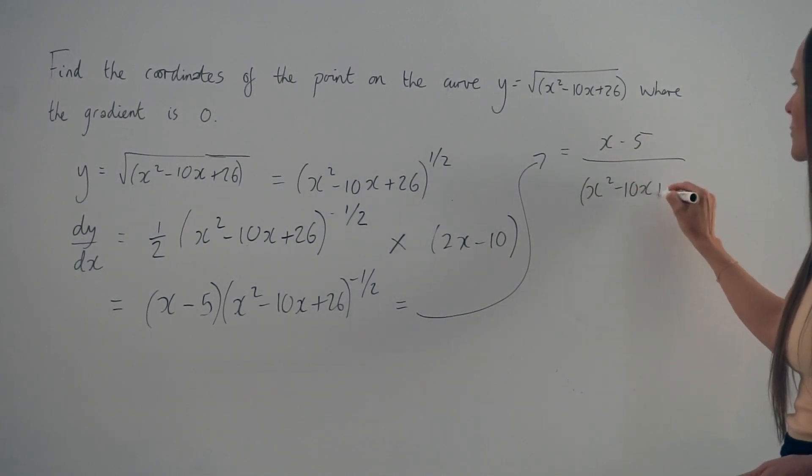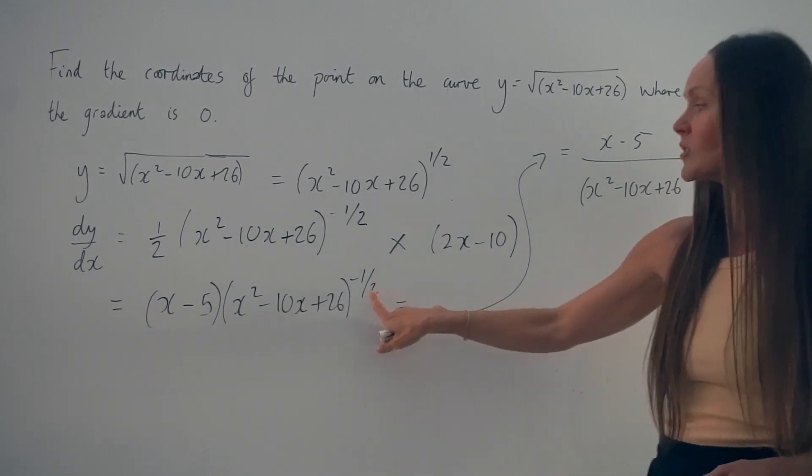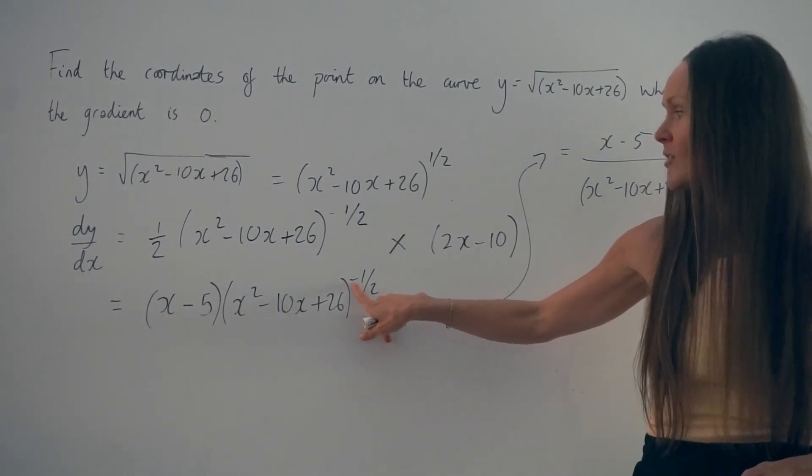x squared minus 10x plus 26, you have to remember to change the power to a positive. So the sign changes.